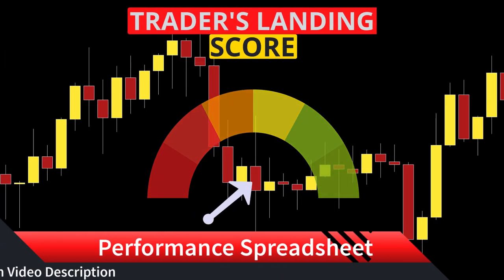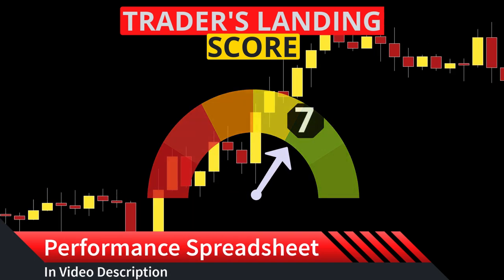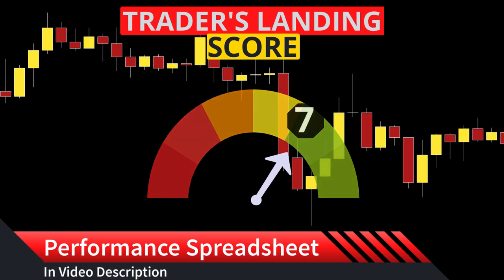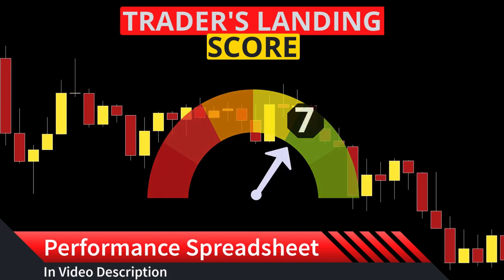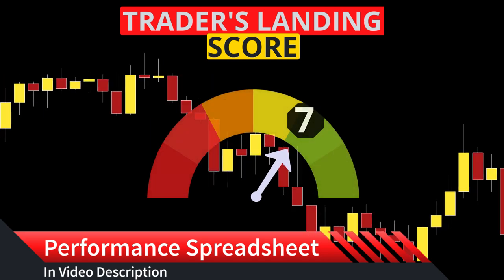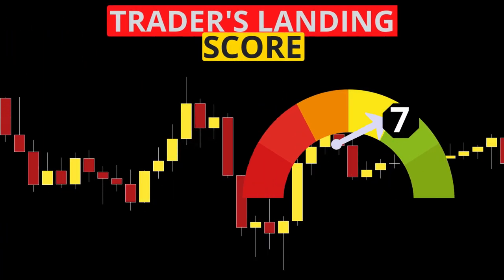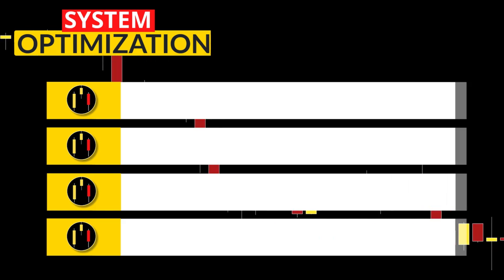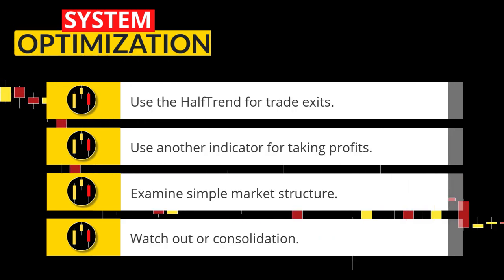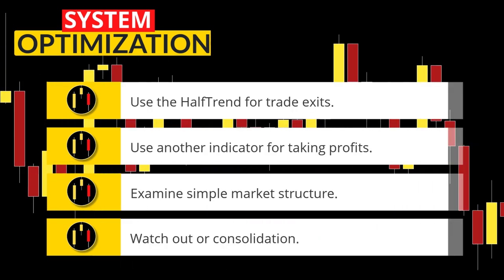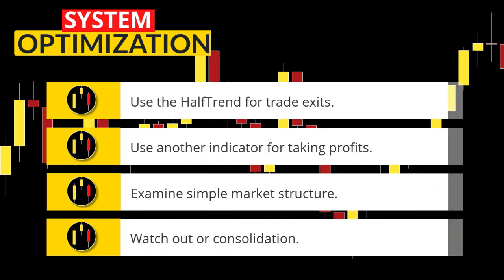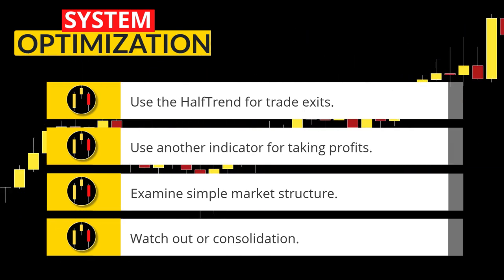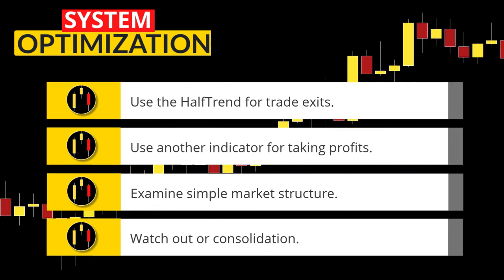What score would you give this strategy? Let me know in the comments below. I give the system a trader's landing score of seven because it is easy to identify signals and uses higher time frame confirmation for entries. Remember, the enemy of great is good. I have four ideas on how we can improve this system. First, we can potentially increase our gains by using the half trend for not only entry signals but also as a dynamic exit signal.